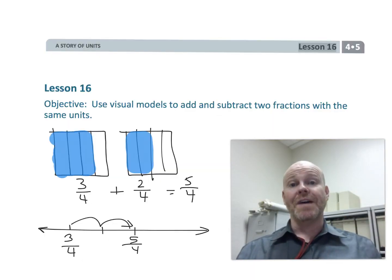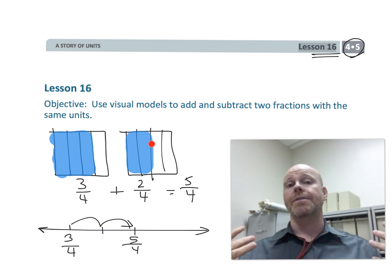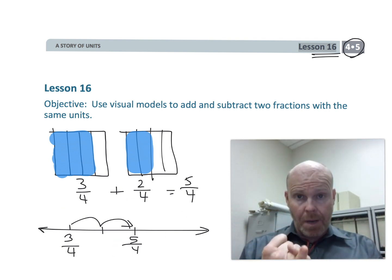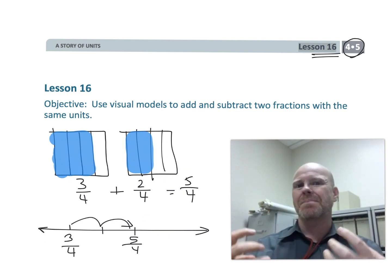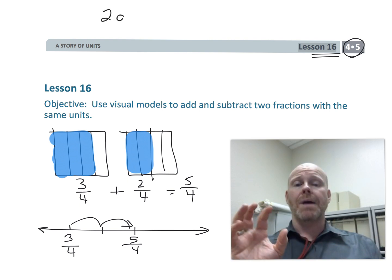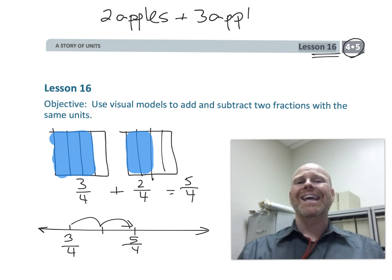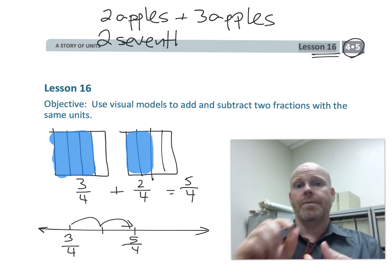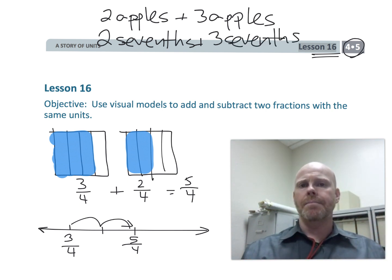This is fourth grade module 5 lesson 16. In this lesson, students are going to be using visual models to add and subtract fractions with the same unit. The visual models include the area model, a number line, and the concept of units — similar to how two apples plus three apples equals five apples, we'll say two-sevenths plus three-sevenths equals five-sevenths.